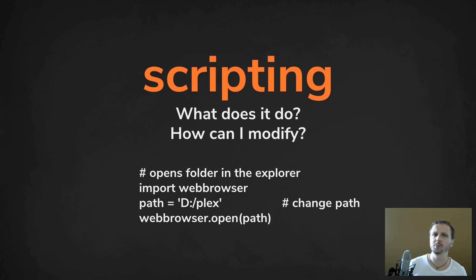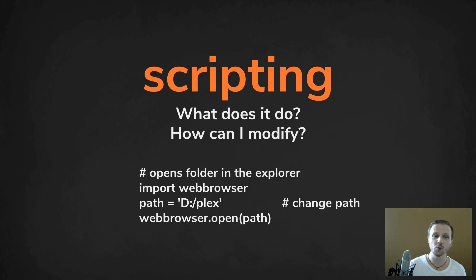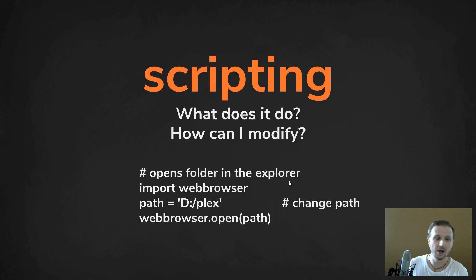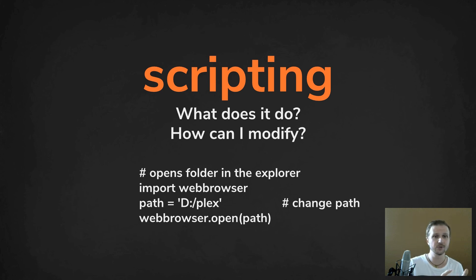When it comes to scripting, you don't have to be a programmer or a pro scripter as an artist. You just need to ask two questions: what does it do, and how can I modify it? For example, with a script that uses import webbrowser and webbrowser.open(path), the answer to 'what does it do' is: it opens a folder in Explorer. To modify it, just change the path variable — for instance, from 'dplex' to 'ctest' to open a different folder. Always ask these two questions to customize any script for your needs.